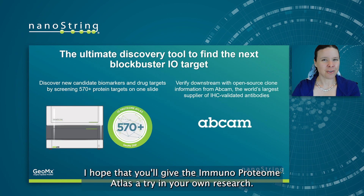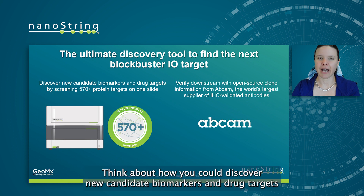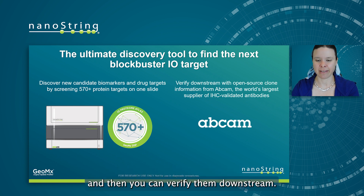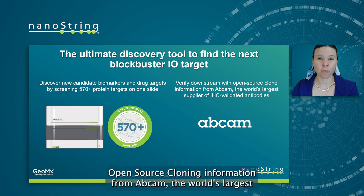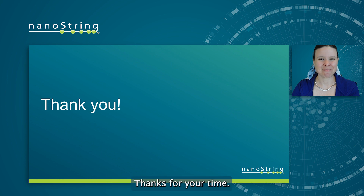I hope that you'll give the IO proteome atlas a try in your own research. It is the ultimate discovery tool to find the next blockbuster IO target. Think about how you can discover new candidate biomarkers and drug targets by screening our 570-plus protein targets on one slide, and then verify them downstream with open-source clone information from Abcam, the world's largest supplier of IHC-validated antibodies. Thanks for your time.